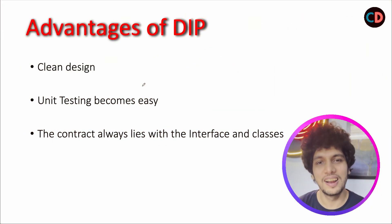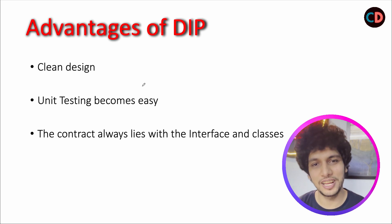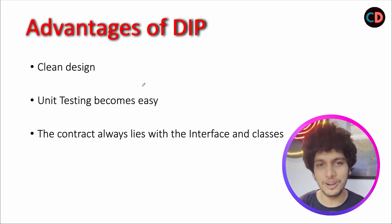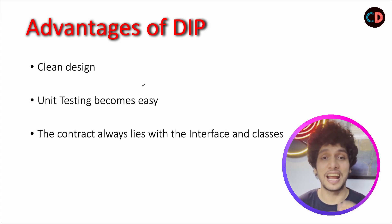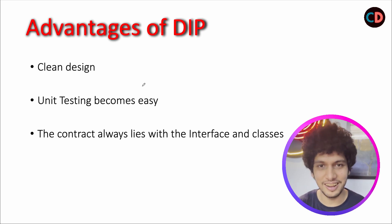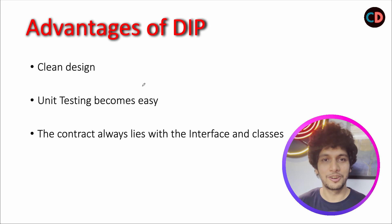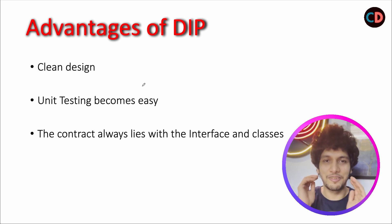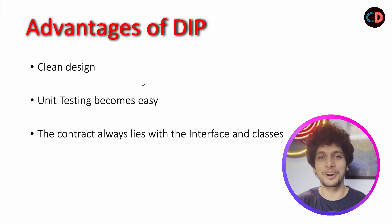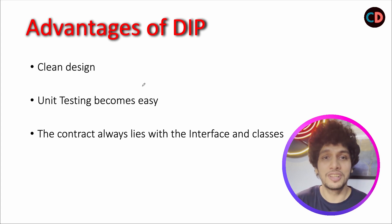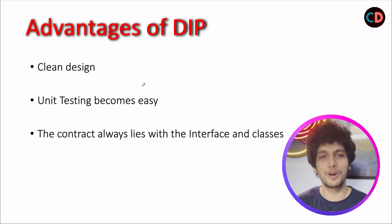To summarize, let's look at the advantages of DIP. The first is clean code. The second is that writing unit tests becomes really easy and convenient. The third is there's a defined contract to which all classes in your code abide. Nothing out of contract will ever happen, and since everything is legitimate as per the contract, you give structure and design to your code, making it cleaner overall.